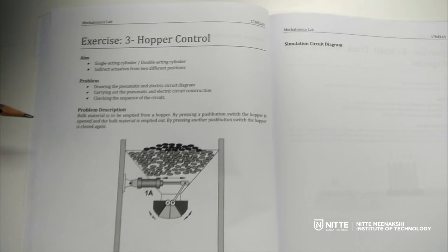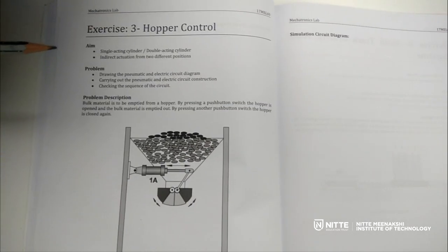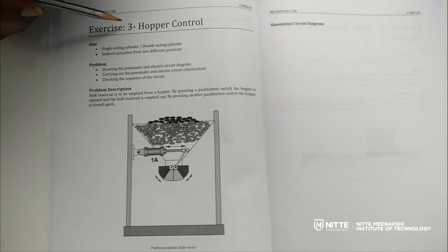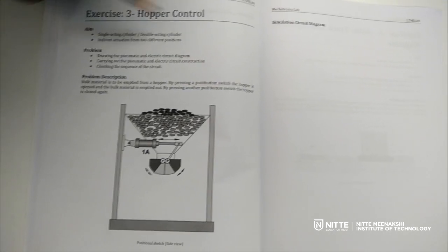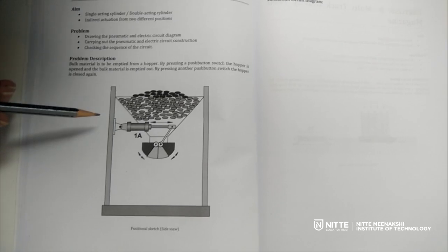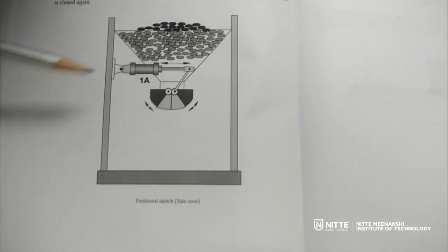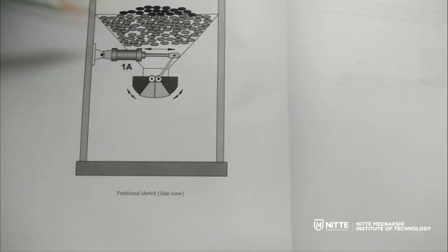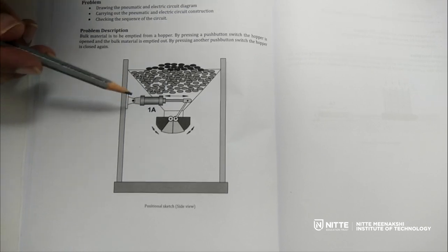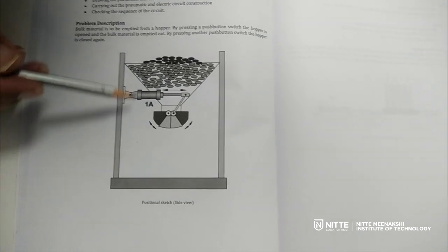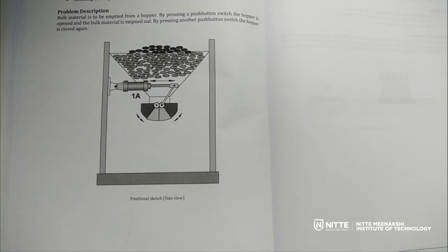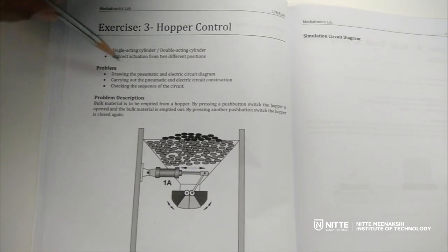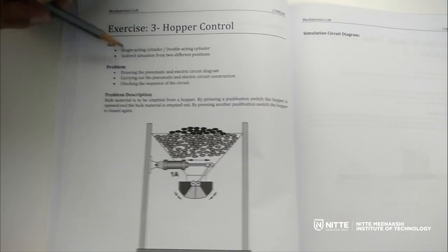Welcome everyone to the Electro-Pneumatic video lecture series. Here we are looking at experiment number three, the hopper control. This experiment is very simple and uses a double acting cylinder. You can use either a double or single acting cylinder, but the double acting cylinder is very much preferred here. We will be actuating the double acting cylinder indirectly, which is the basic difference between earlier experiments and this one.